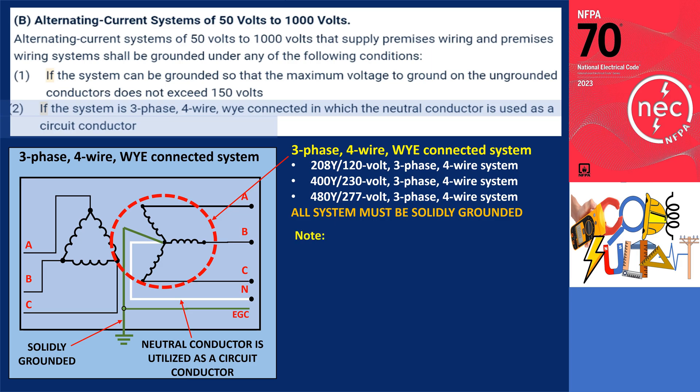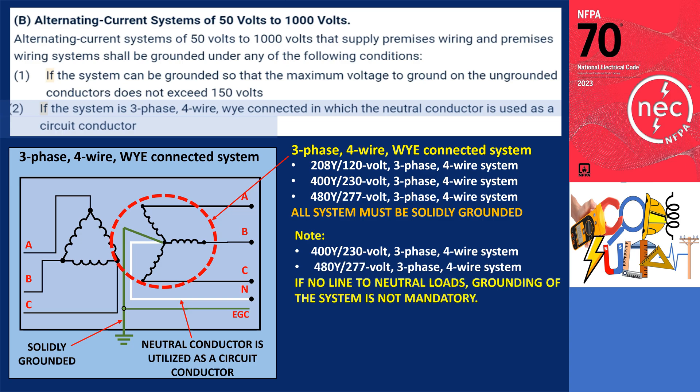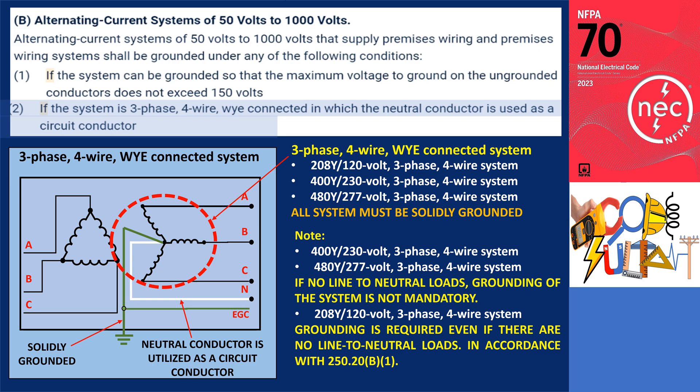It is worth highlighting that certain systems, such as the 400Y/230-volt and 480Y/277-volt, three-phase, four-wire systems, may not have any line-to-neutral loads. Consequently, grounding of these systems is not mandatory but may be optional according to the provisions of 250.21. However, in the case of a 208Y/120-volt system, grounding is required even if there are no line-to-neutral loads. This requirement is specified in accordance with 250.20B1.